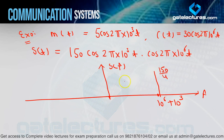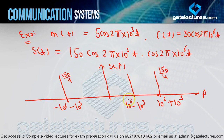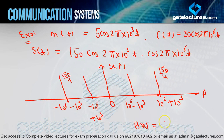Negative side: impulse at −(10⁶ + 10³), amplitude 150/4. Also impulse at FC−FM = 10⁶ − 10³, with amplitude 150/4, and on the negative side at −10⁶ + 10³, amplitude 150/4. Bandwidth = 2FM = 2 × 10³ = 2 kHz.